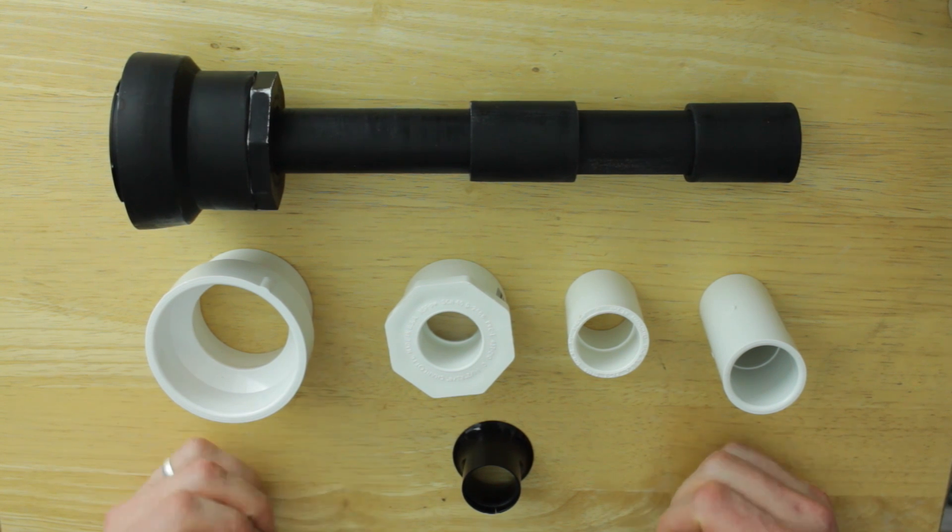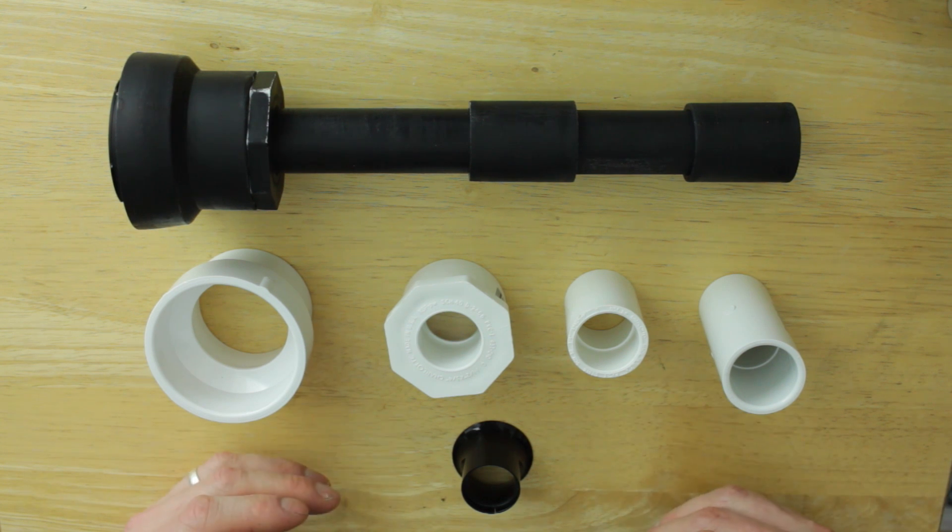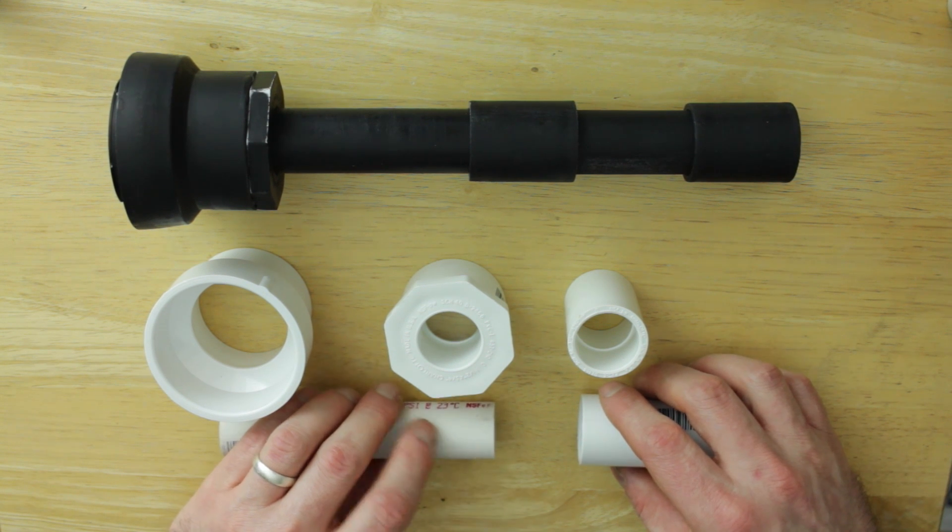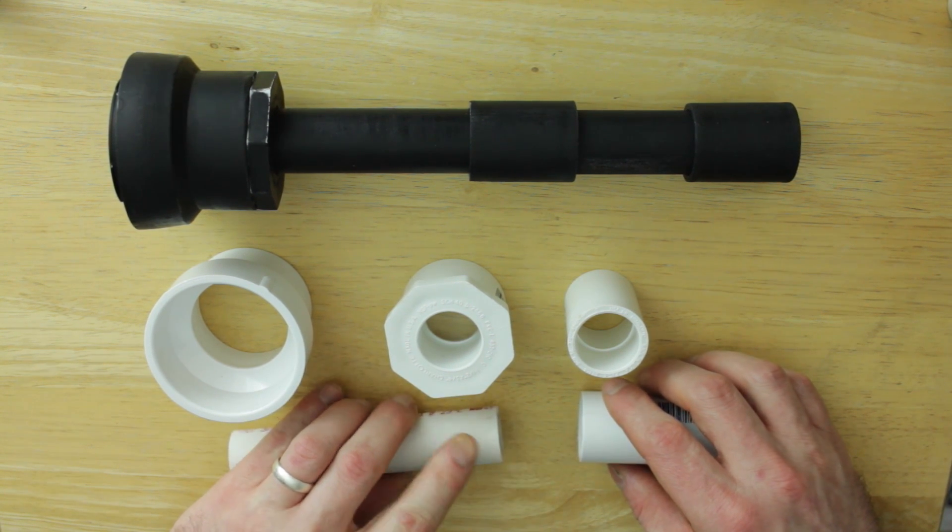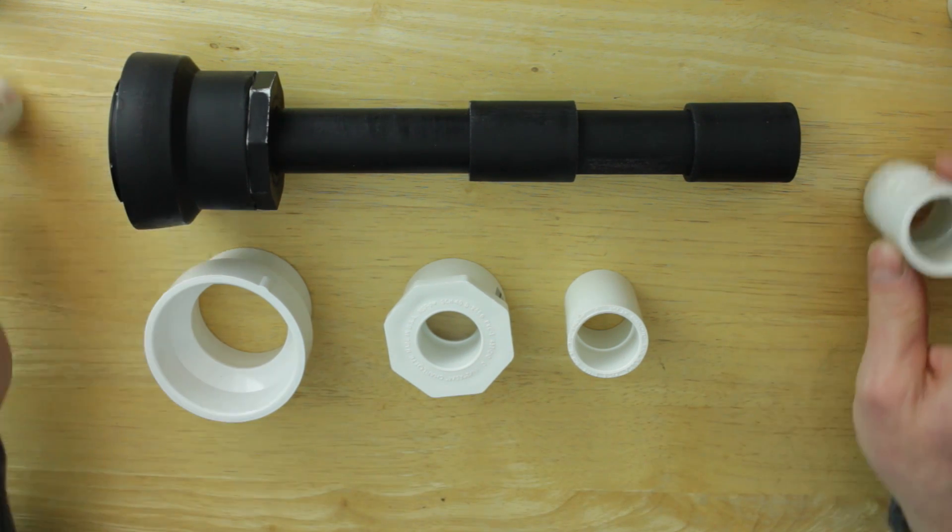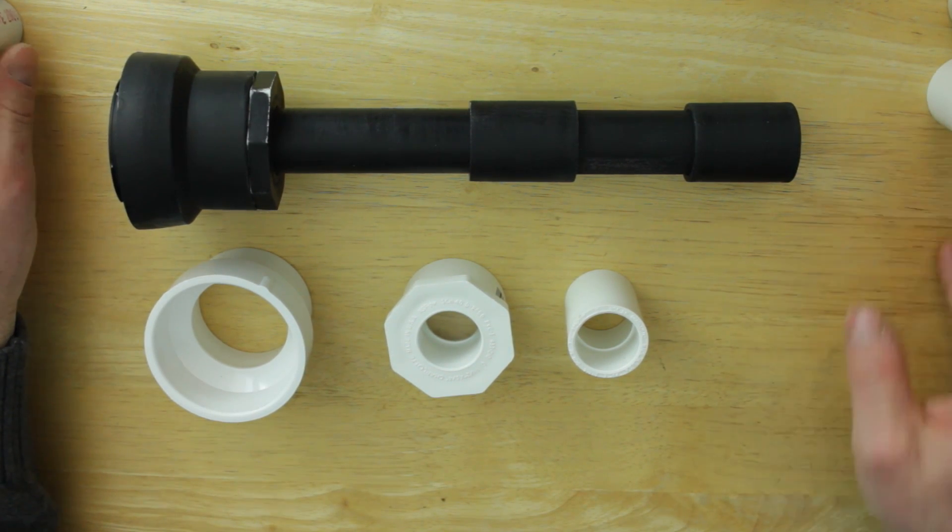Once you're happy everything is in focus, you're ready for paint. So disassemble everything and give it a light sand inside and out. Then hit it with your favorite spray paint. To make your life easier when you go to reassemble everything, I suggest masking off the mating surfaces, so that way when you go to reassemble it, chips of paint aren't flaking off and getting all over the inside of your assembly.